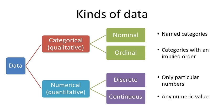Numerical data we also break up into two kinds. Discrete data is where only particular values are allowed, usually only whole numbers, like how many cars or number of children.